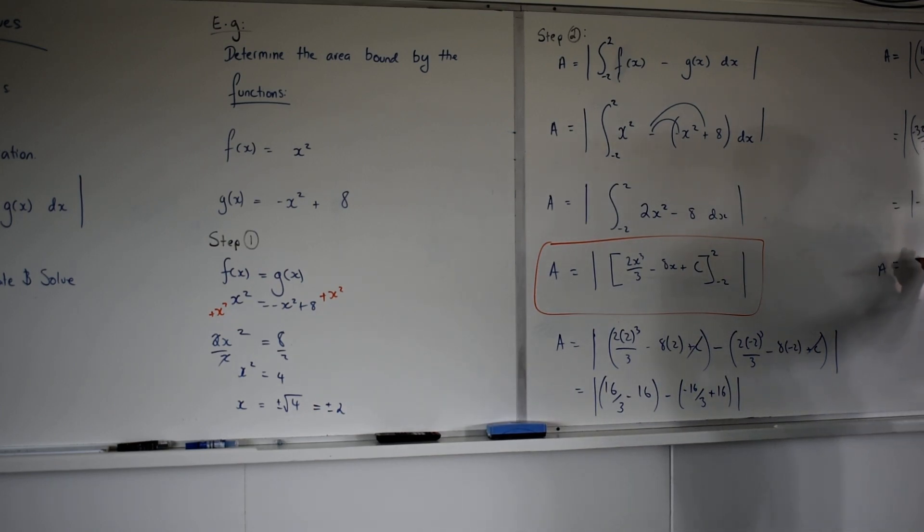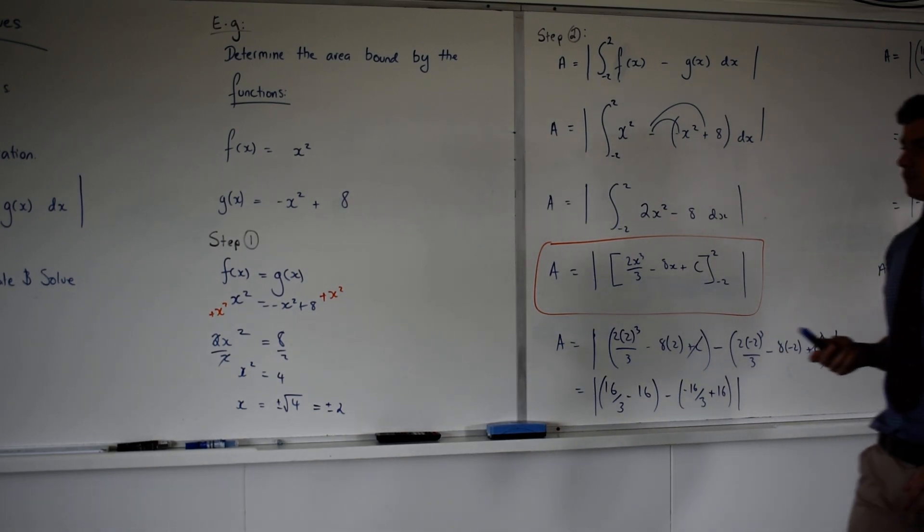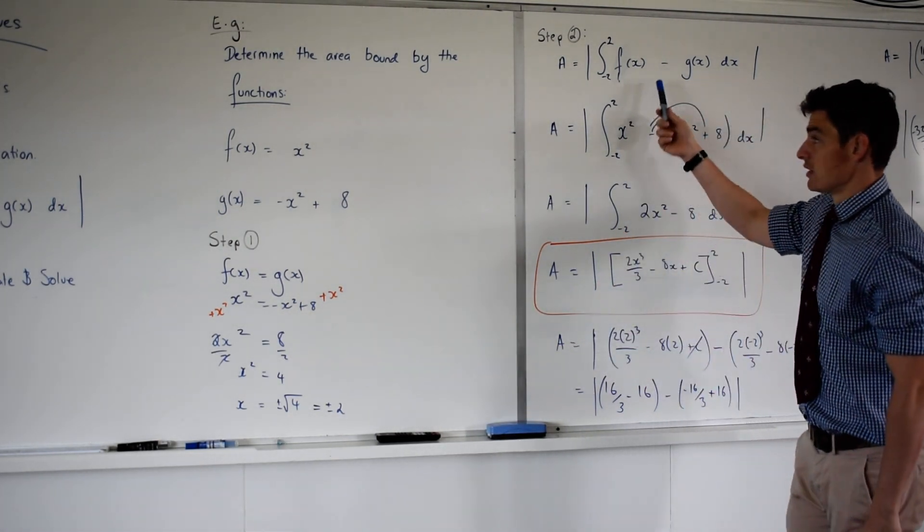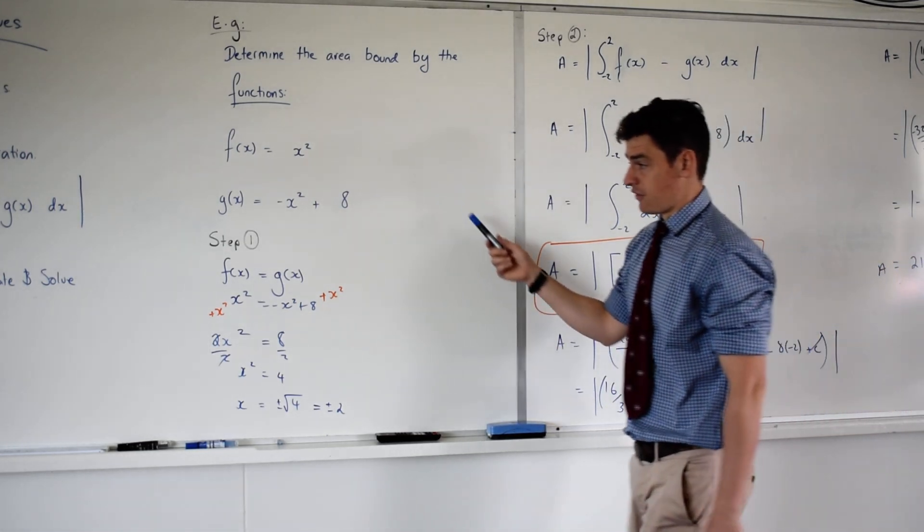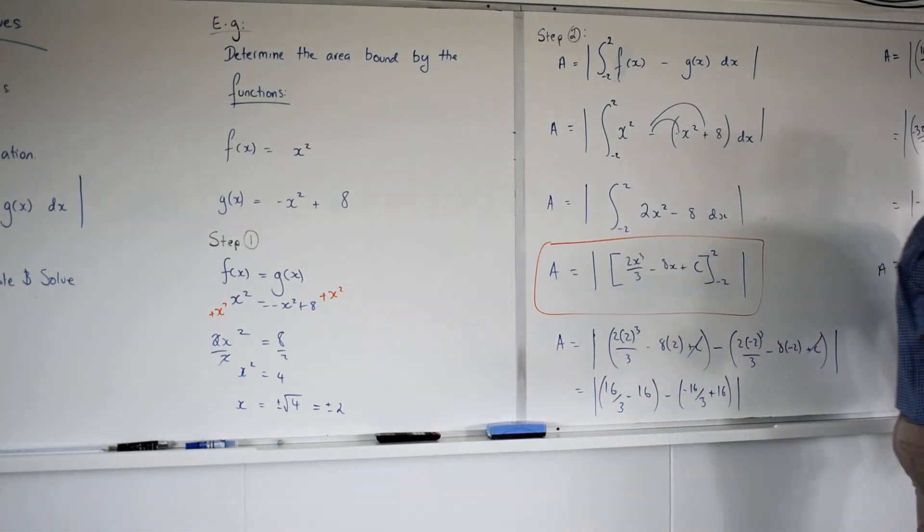Yep, we just make it positive. 21 and a third what? Unit squared. Unit squared. Yeah. Does that make sense? Yes. What's different about it? Step one. Everything else is exactly the same, correct? The only thing that's different is we have to find our intercept first. Cool? Awesome. I'll let you guys get going on some work.